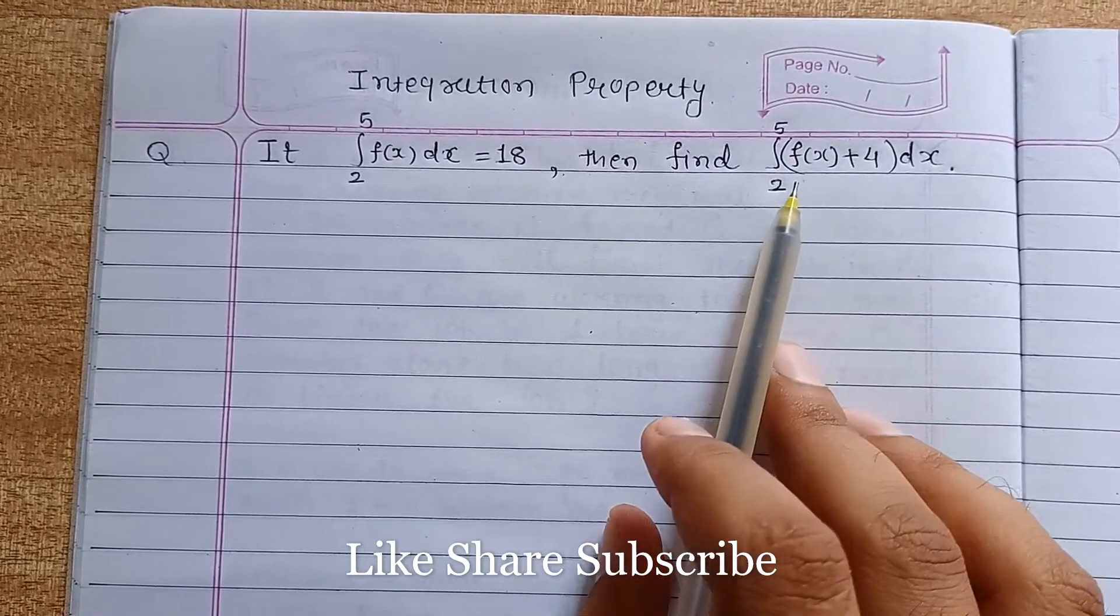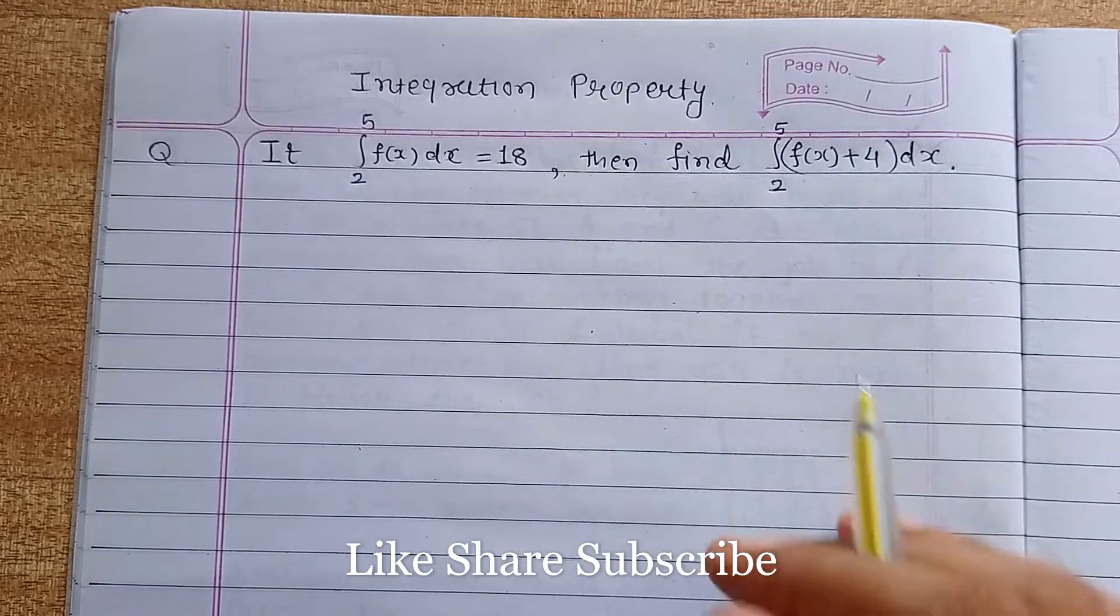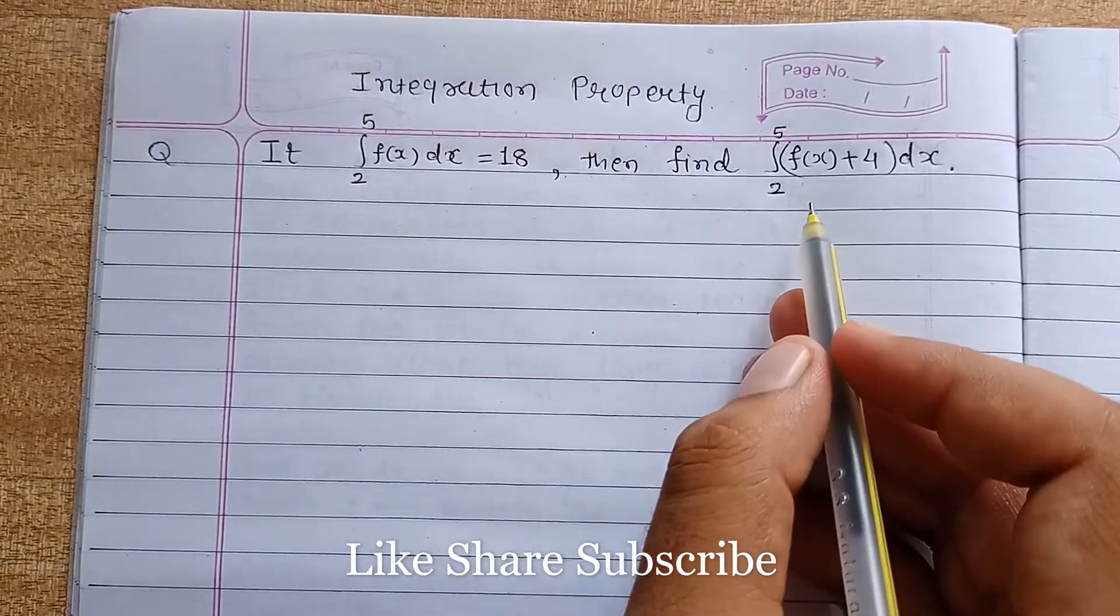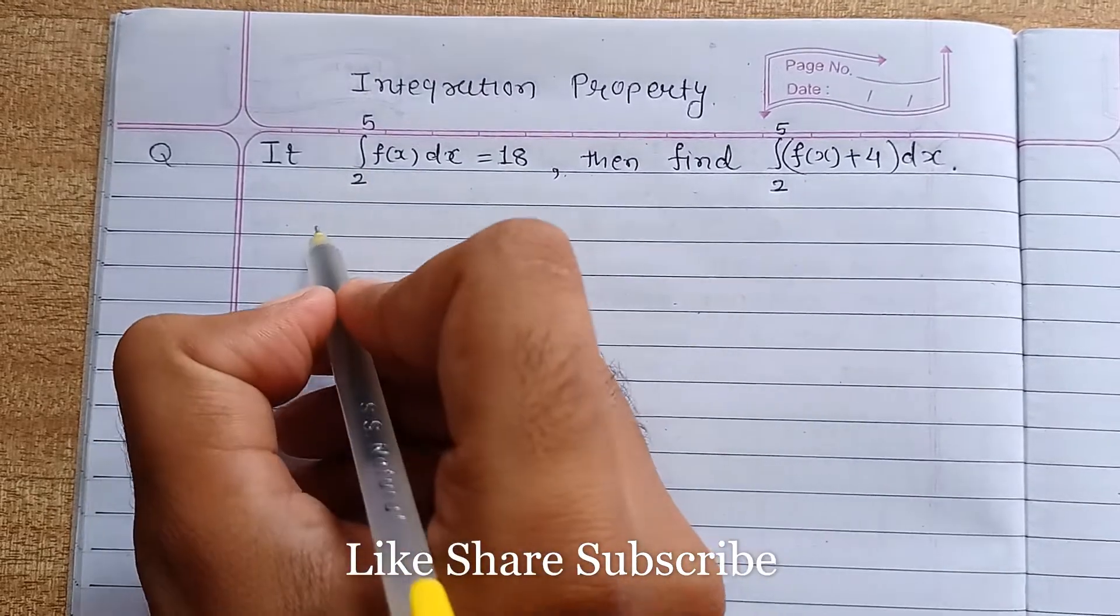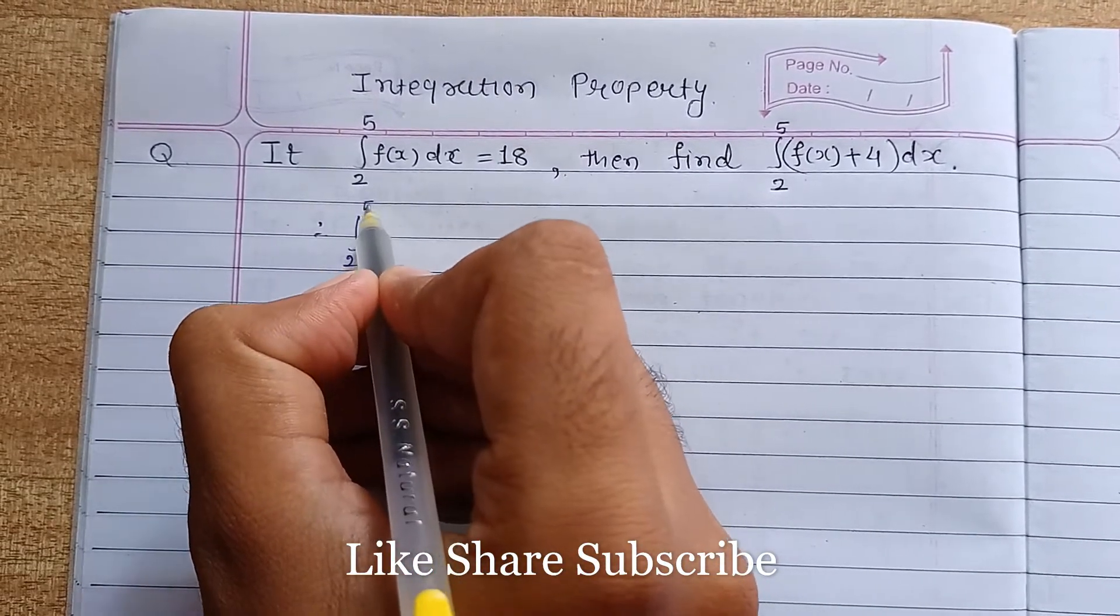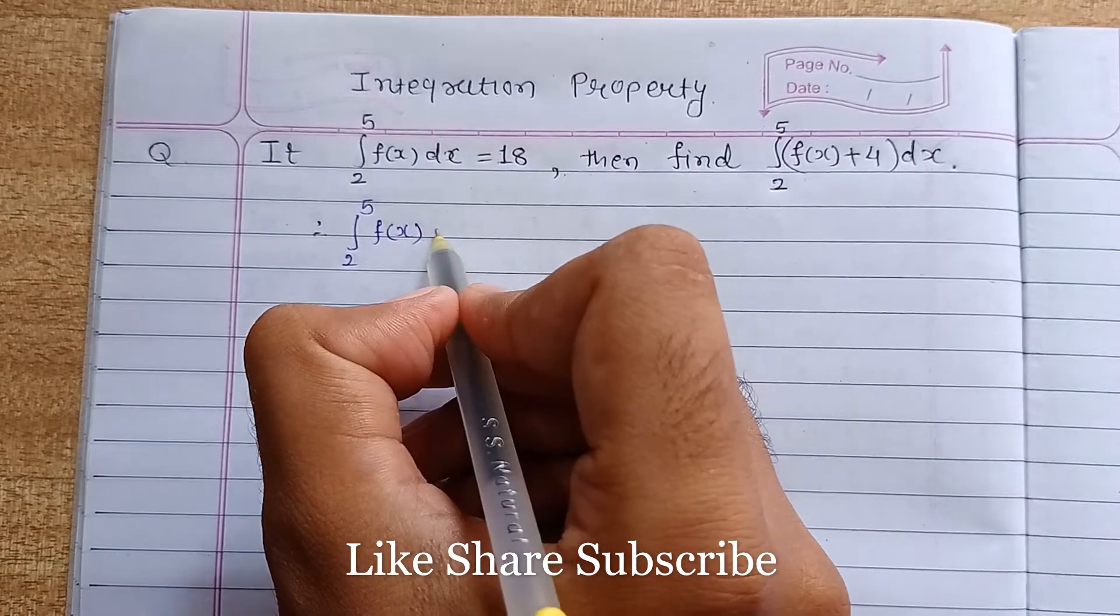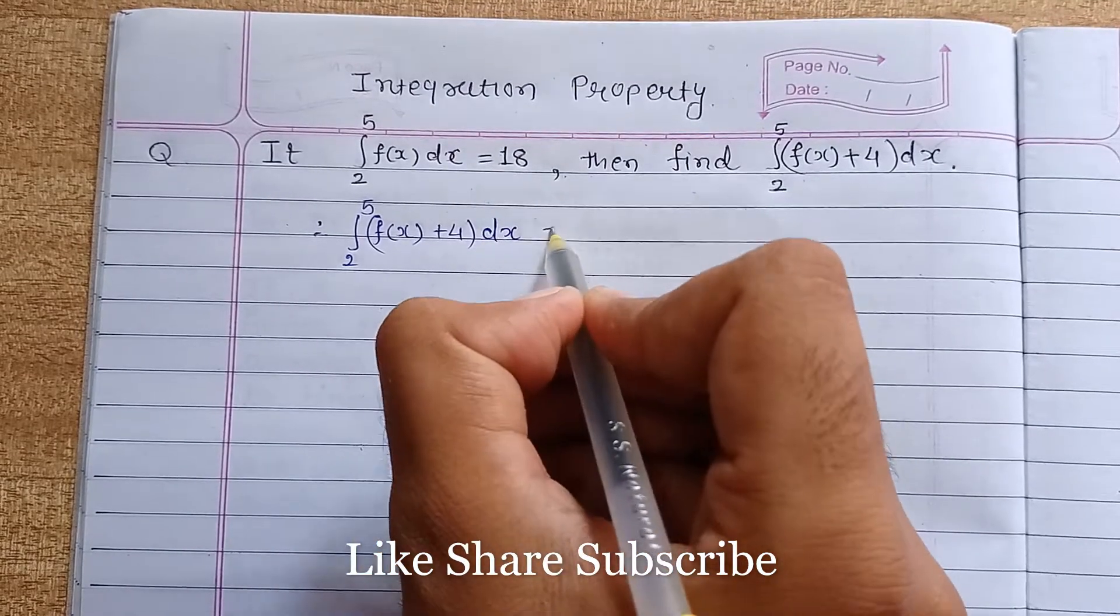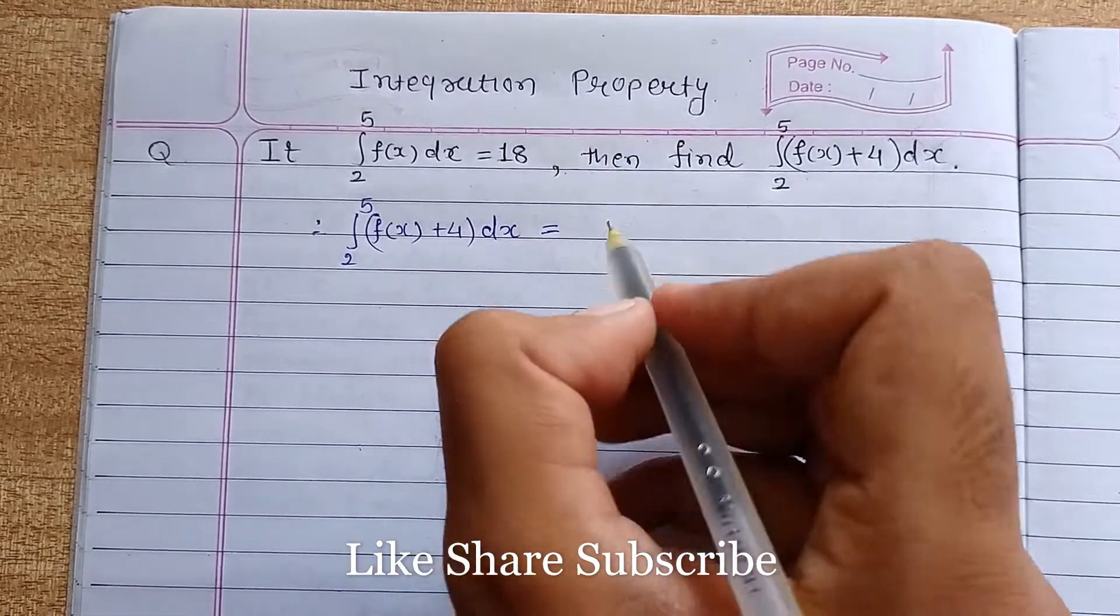This is a simple problem related to the integration property. The additive property of integration says that if integration 2 to 5 of f(x) + 4 dx, you can separately integrate both the terms.